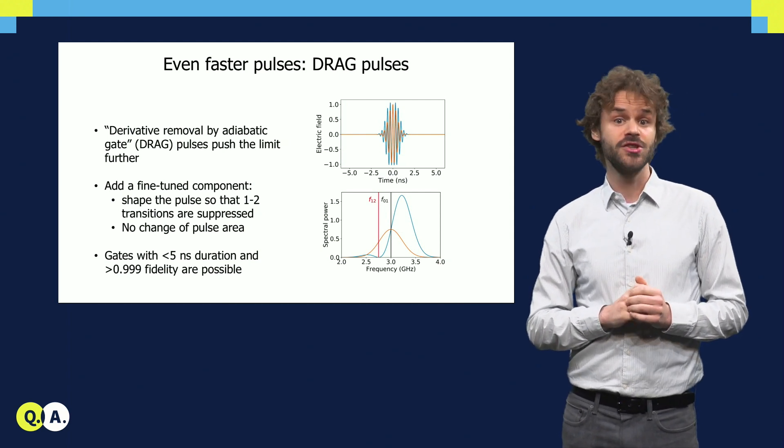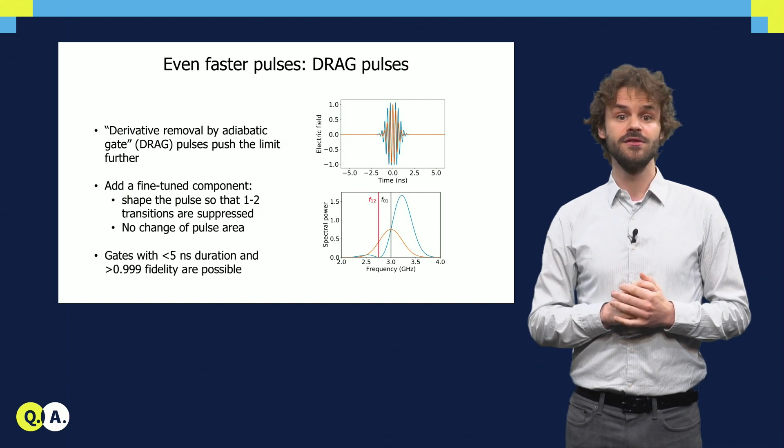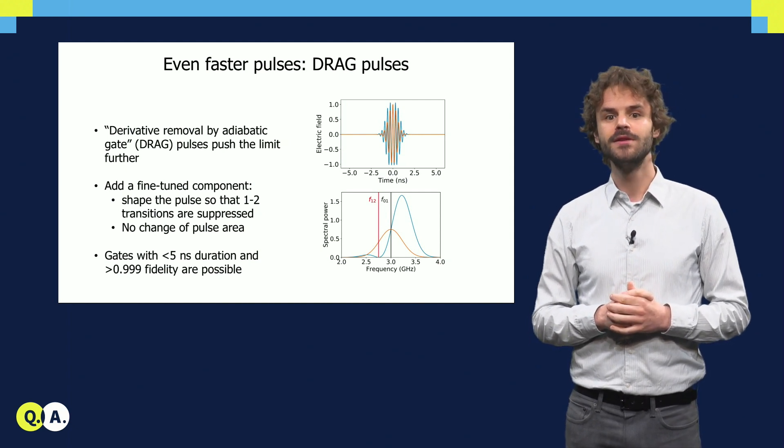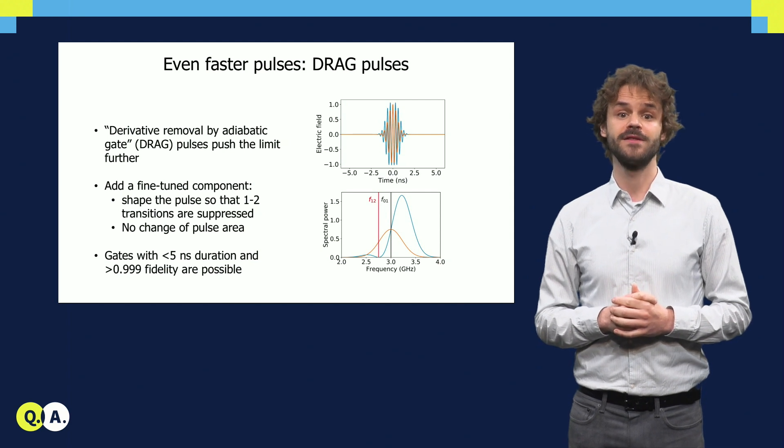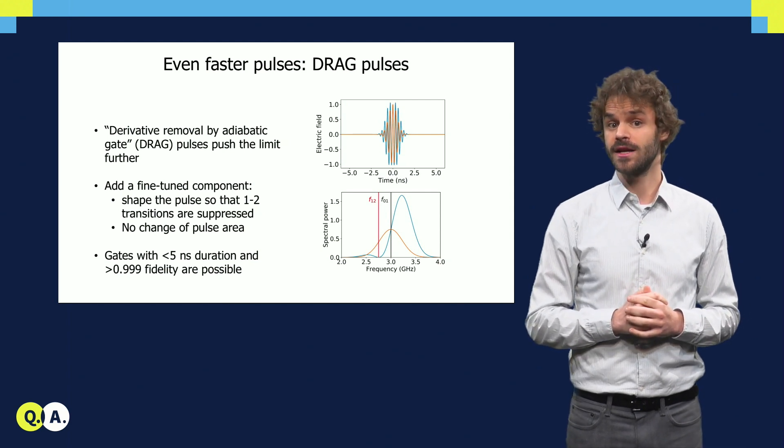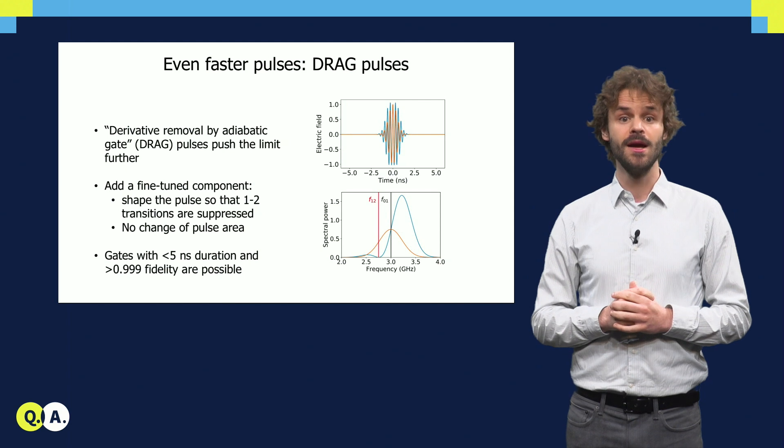But the transitions to the 2-state are actively suppressed. Using this technique, pulse lengths can be reduced to well below 5 nanoseconds without the second transmon state being a concern.